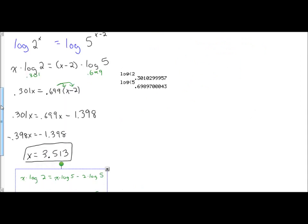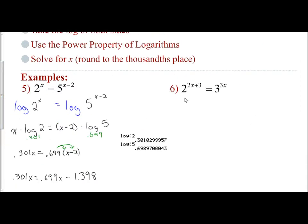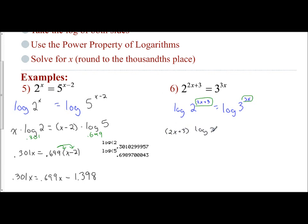Let's move on to the last example. I have 2 to the 2x plus 3 equals 3 to the 3x. Since I do not have a common base, I'm going to have to solve by taking the log of both sides. So log of 2 to the 2x plus 3 equals log of 3 to the 3x. I do that so I can take my expressions in the exponent out of the exponent and make it the coefficients of my logs.